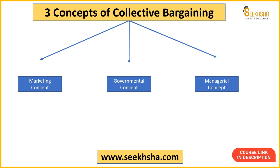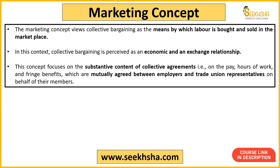Now next we will move on to the concept of collective bargaining. When we talk about concepts, three concepts emerge: marketing concept, governmental concept, and managerial concept. Basically these concepts describe what mechanism is being used in the bargaining. The marketing concept views collective bargaining as something where labor can be bought and sold in the market — it becomes an economic exchange relationship.